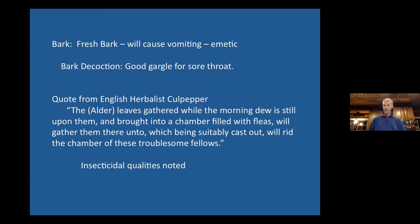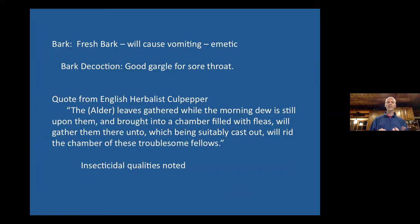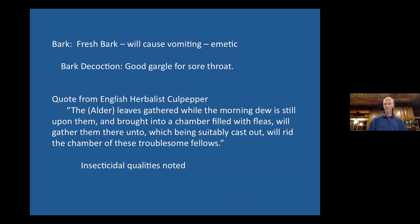The bark, when fresh, can cause vomiting, so it's used as an emetic. But a bark decoction — remember, a decoction is made by taking a hard part like the root or bark and boiling it in water for 20 to 30 minutes — that water poured off can be used as a gargle for a sore throat. Wash it around your mouth, gargle it, and spit it out. If you drink it, it may cause vomiting, but by rinsing and spitting it out, you can aid in relieving a sore throat.